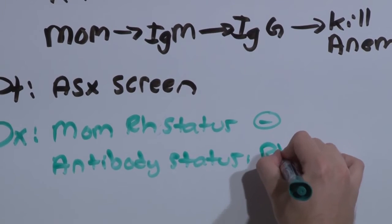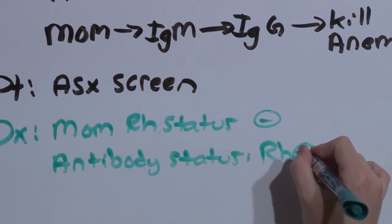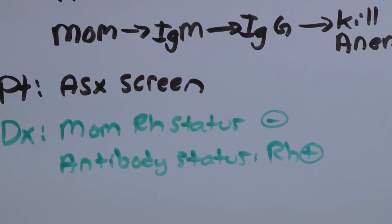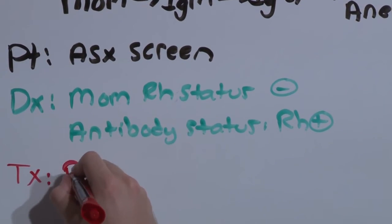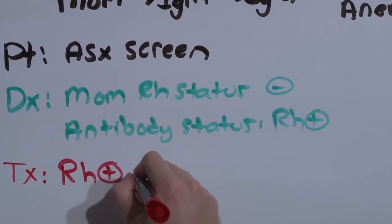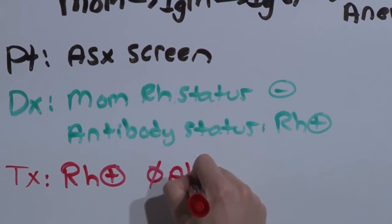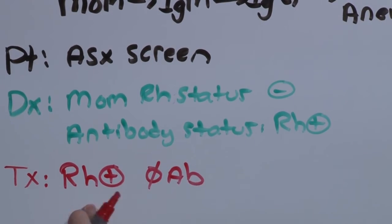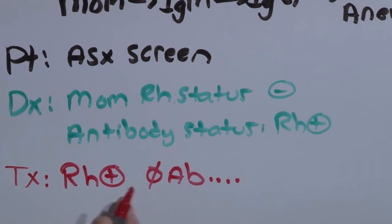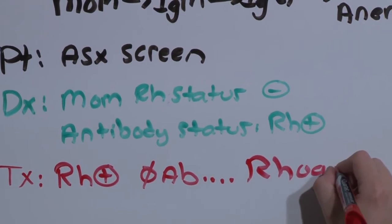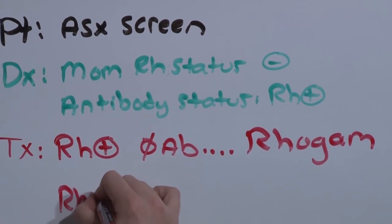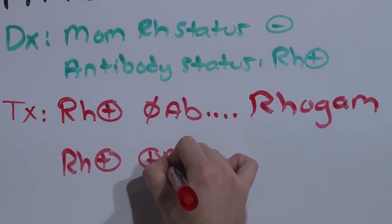That is, is she RH positive antigen antibody positive or antibody negative? Because if she has no antibodies to RH positive antigen, this is where you can prevent her from ever developing those antibodies by giving her Rho gam.